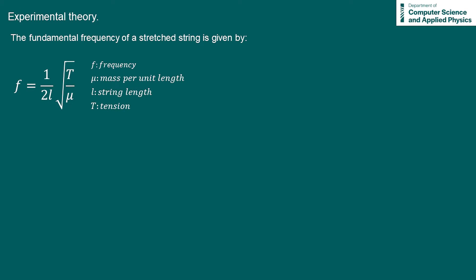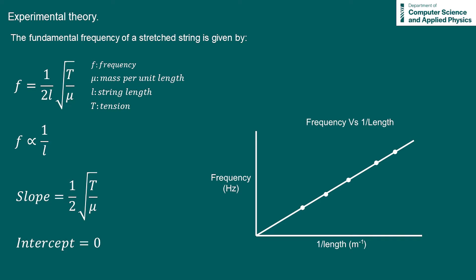To investigate how the fundamental frequency varies with length, we need to use this formula. As you can see, f is proportional to 1 over L. So if we plot f versus 1 over L and apply a line of best fit, we should get a straight line that passes through the origin, with the slope equal to a half root T over mu.